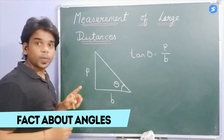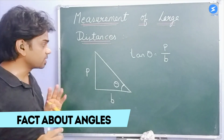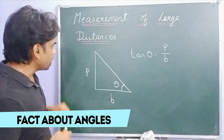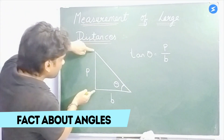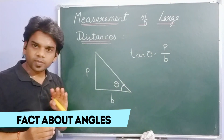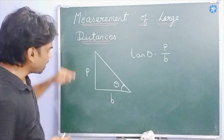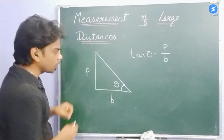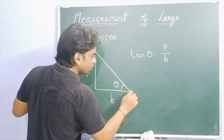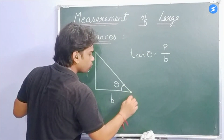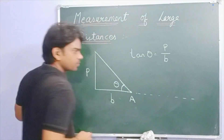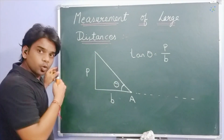Now, think about this: if this perpendicular is very small — just imagine, if this perpendicular is very small — and if I mark this point and this point is very far, so very far...